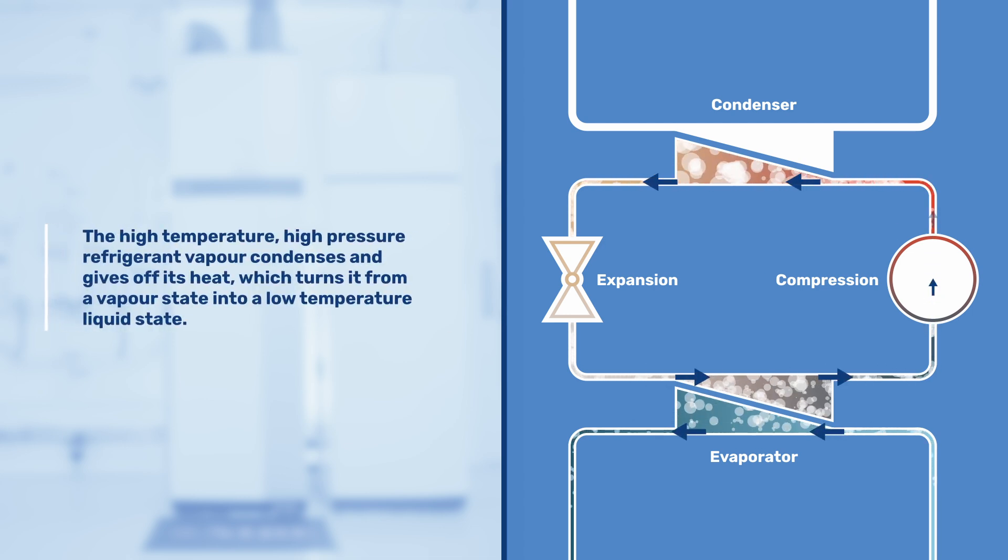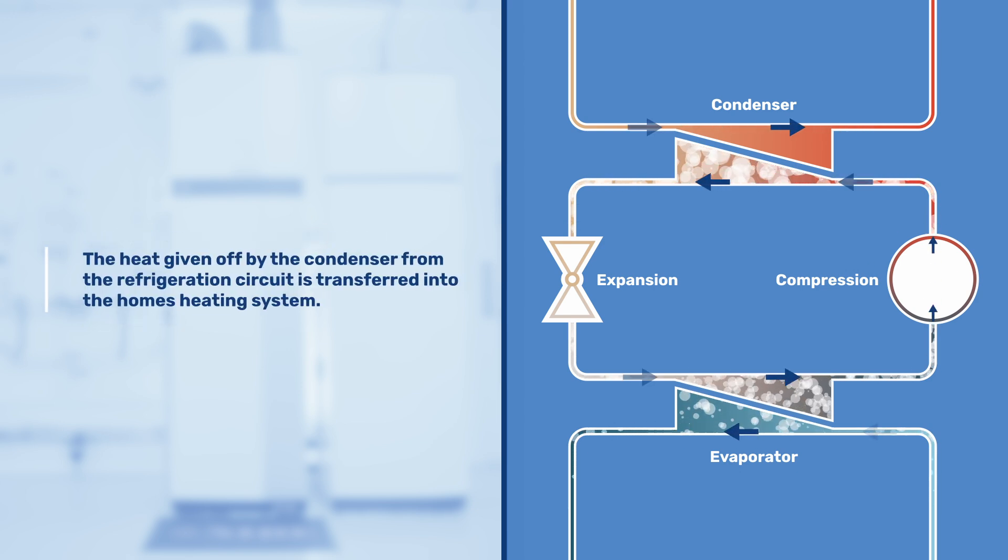The high temperature, high pressure refrigerant vapor condenses and gives off its heat, which turns it from a vapor state into a low temperature liquid state. The heat given off by the condenser from the refrigeration circuit is transferred into the home's heating system.